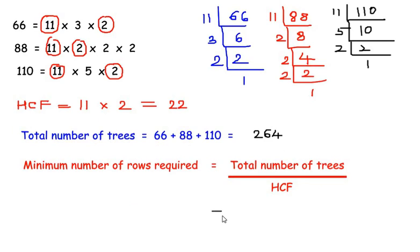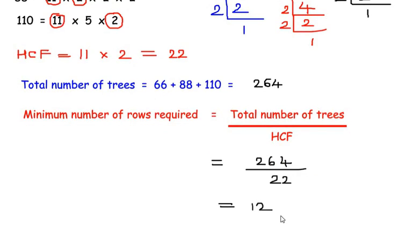So here total number of trees we got it as 264 and HCF we had got it as 22. So dividing it we get the value as 12. Which means we need 12 rows and in each row there have to be 22 trees to accommodate all these different types of trees.